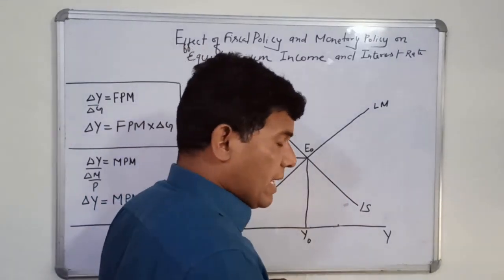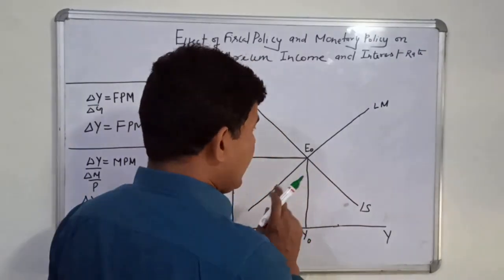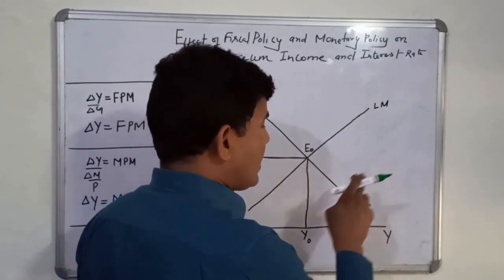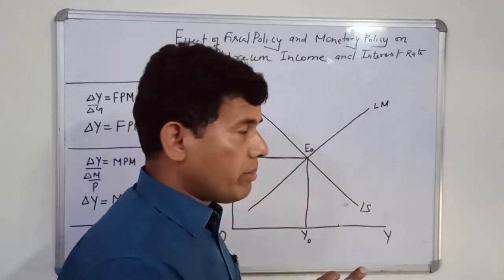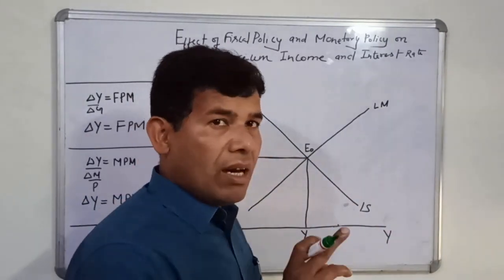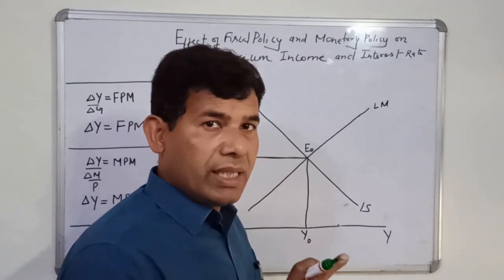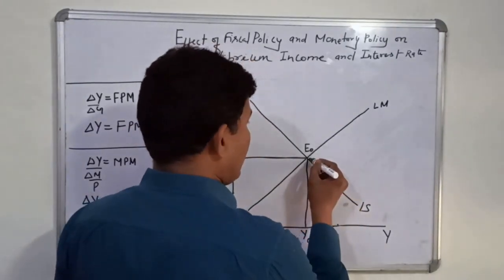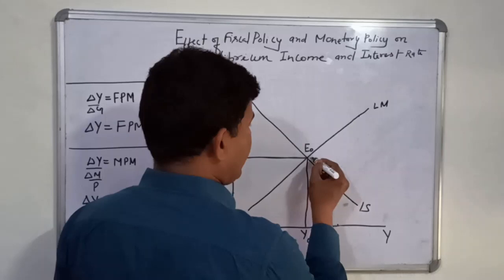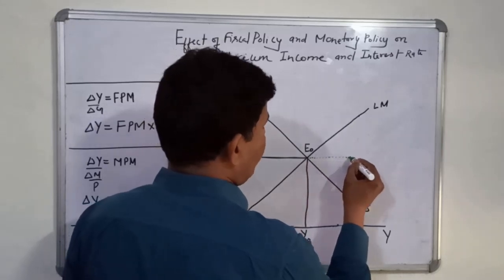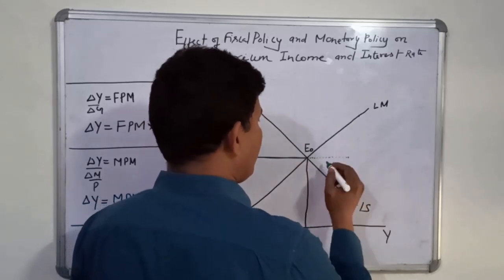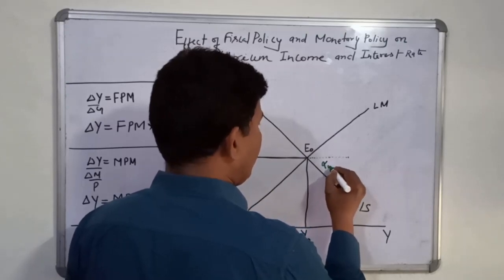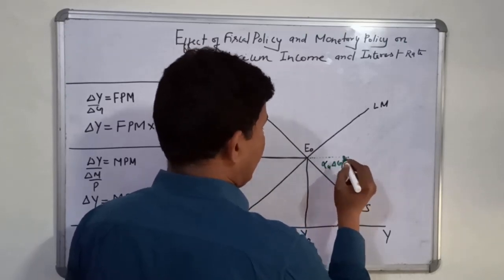As far as the magnitude of the rightward shift of the IS curve is concerned due to rise in government expenditure, it will be alpha G multiplied by delta G. So the rightward shift of IS curve would be equal to alpha G into delta G. If delta G is higher given alpha G, the horizontal shift of IS curve would be more. If delta G is lower given alpha G, then the horizontal shift of IS curve would be less.